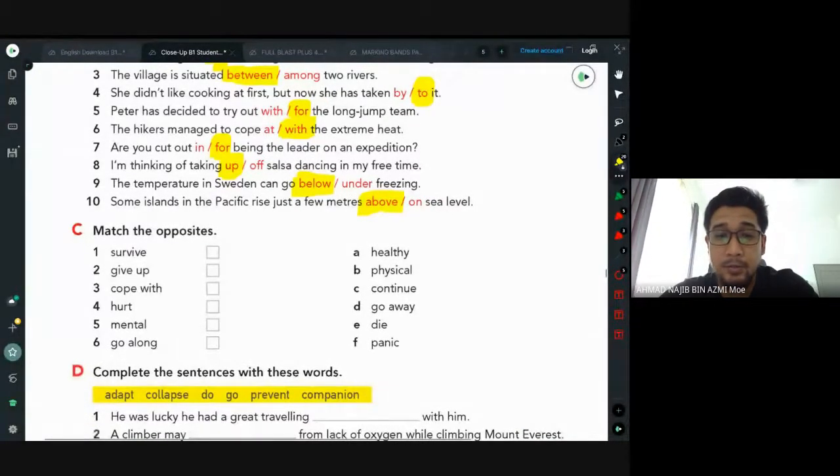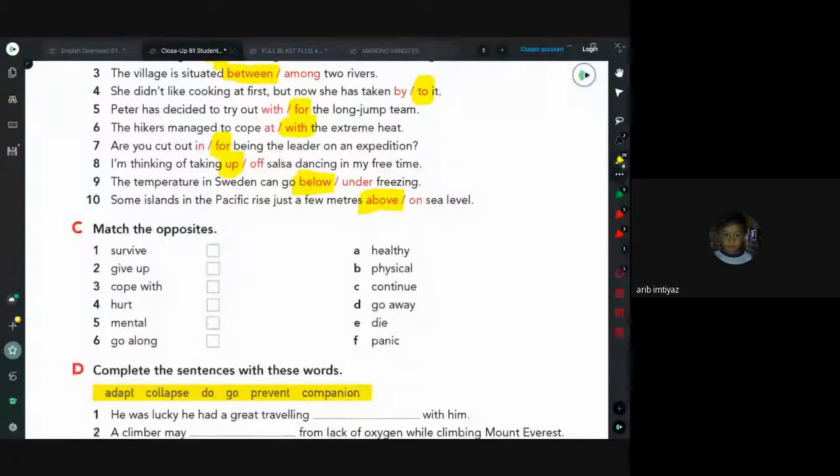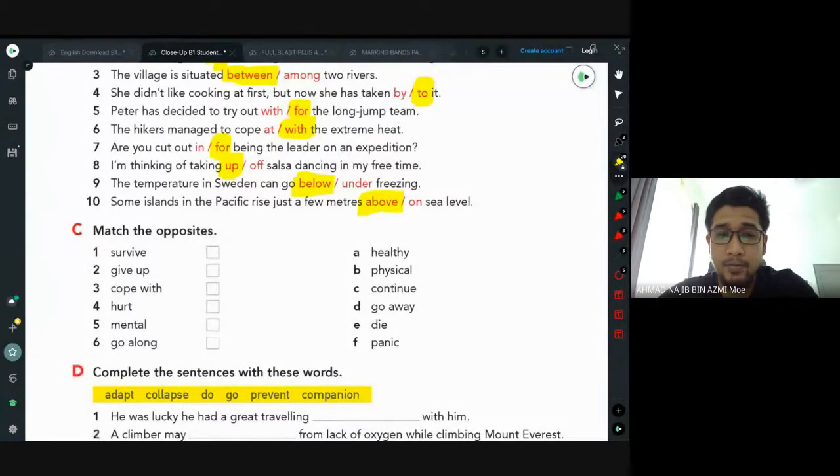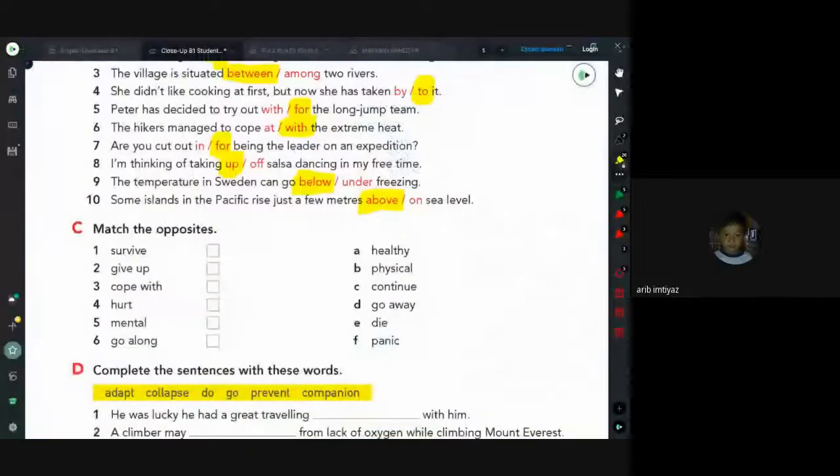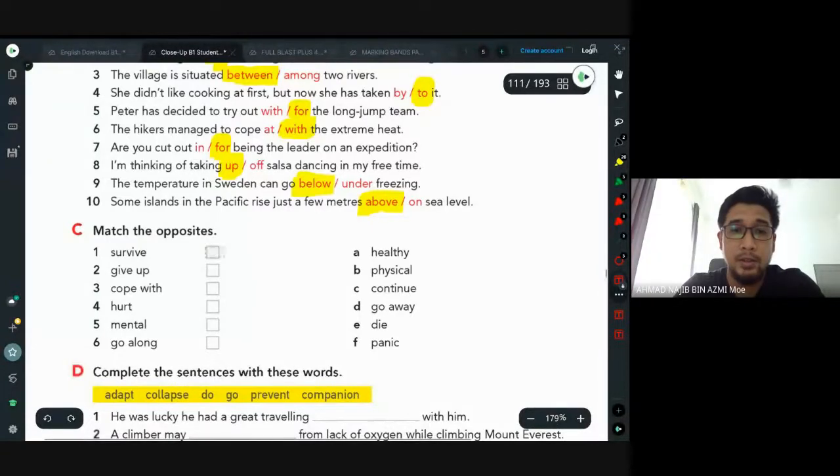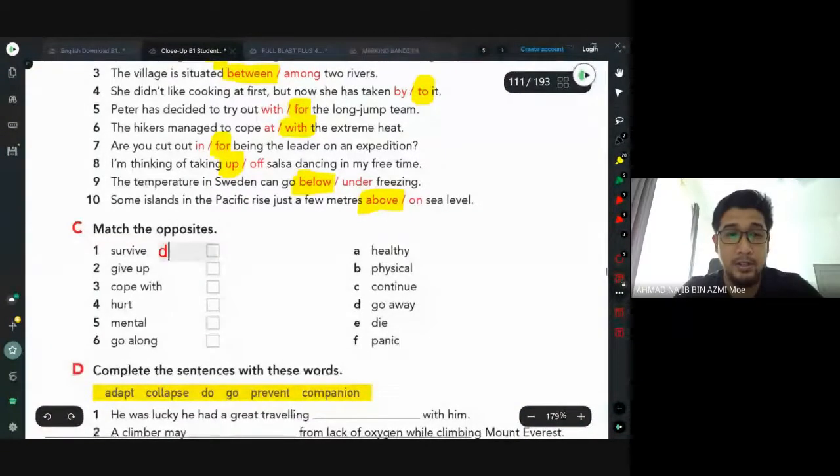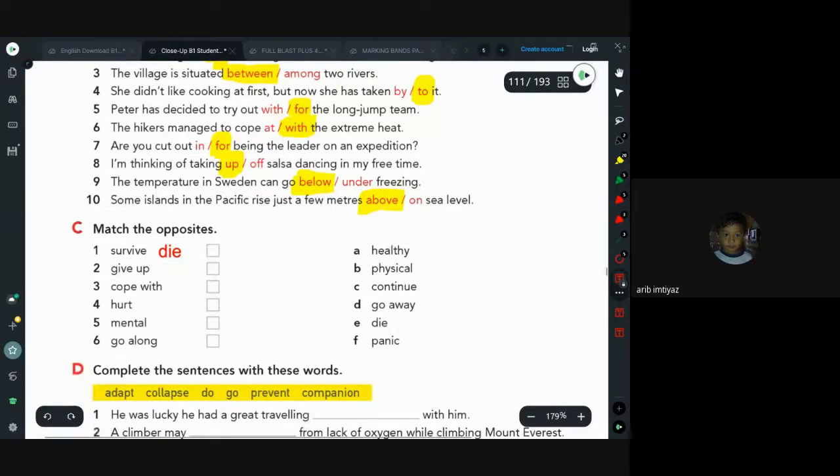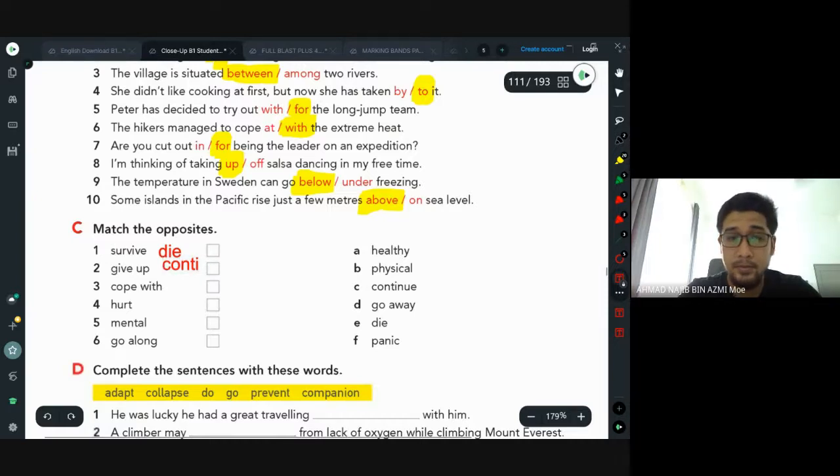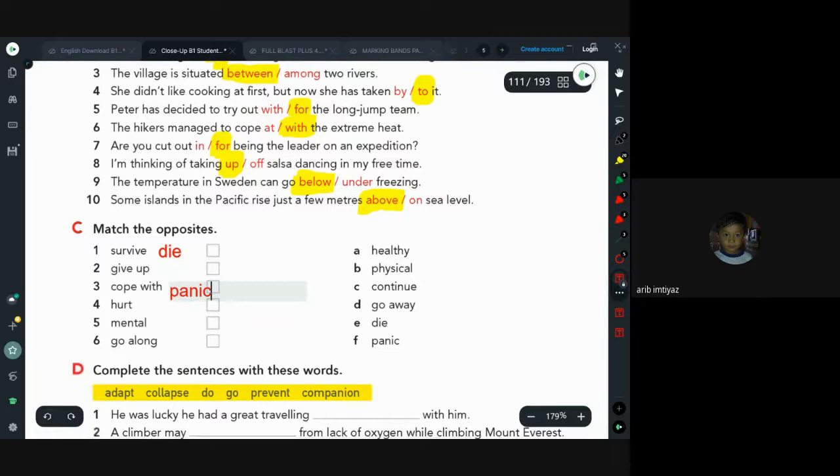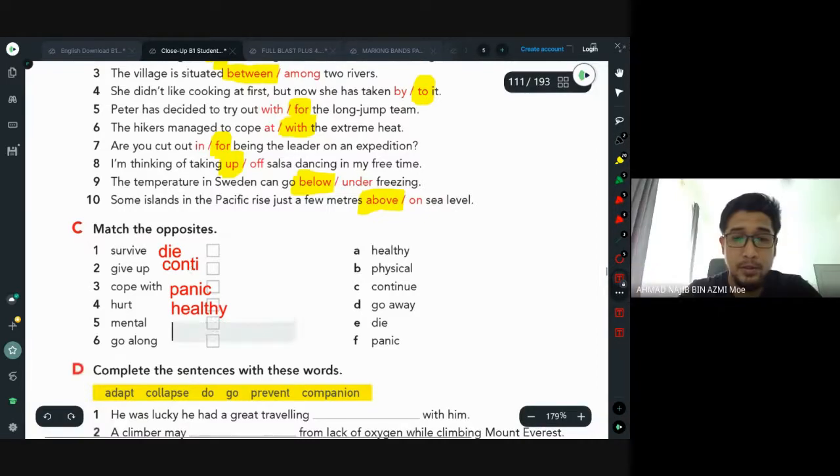Thank you, Fata. Match the opposites. This one is an easy one. Survive - die. Give up - continue. Panic - stay calm. Injured - healthy. Mental - physical. Go alone - go with others.